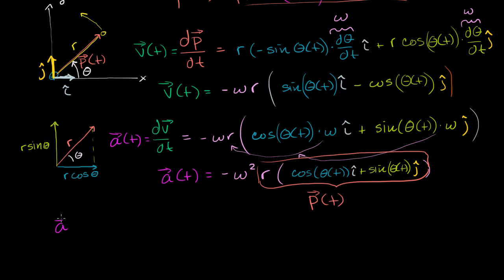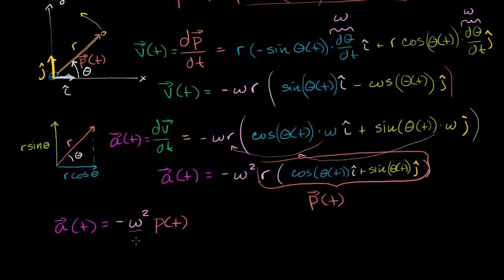So we got a very interesting result: our acceleration vector as a function of time is equal to negative omega squared times our position vector. Angular velocity is treated as a constant scalar quantity here — it's formally a pseudo scalar in two dimensions — but the key result is that acceleration equals negative omega squared times the position vector.